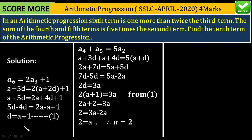Then put this value of a equals 2 in equation 1. Now put the value of a as 2, we get the value of d as 3. So we got a equals 2 and d equals 3.